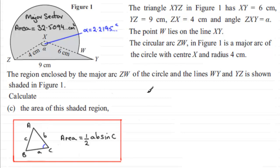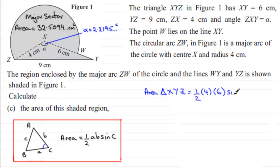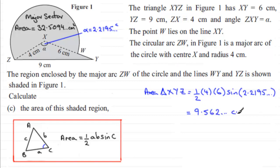So using this idea, the area of triangle XYZ is going to equal half the product of the two sides — that's 4 times 6 — times the sine of the included angle, which is alpha. I'll put the unrounded version in: 2.2195 and so on radians. Now if you make sure your calculator is in radians mode, then you should be able to find that you get 9.562 and so on cm².